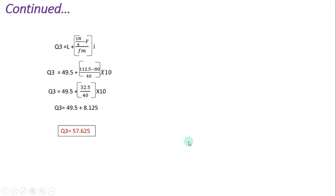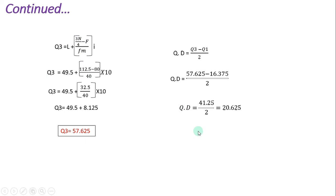Now we have the exact values of Q1 and Q3. Substituting in the formula: QD = (Q3 minus Q1) / 2 = (57.625 minus 16.375) / 2 = 41.25 / 2 = 20.625. Therefore, the quartile deviation QD is 20.65. This is how we calculate quartile deviation using these two formulas.